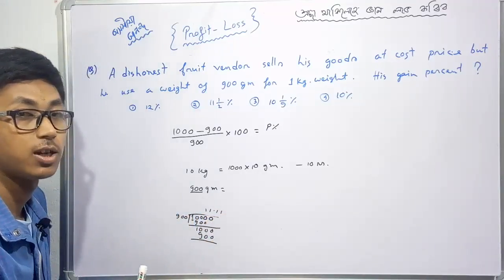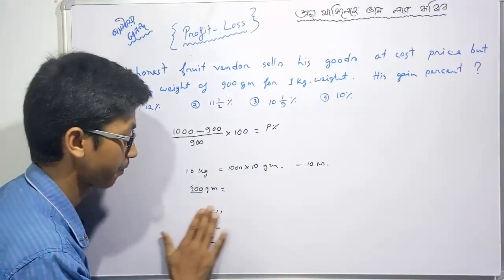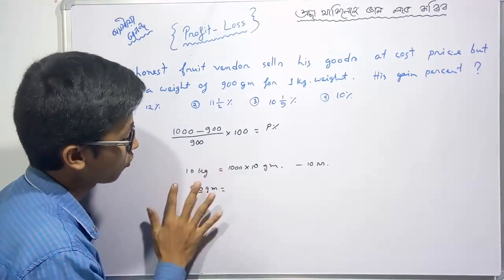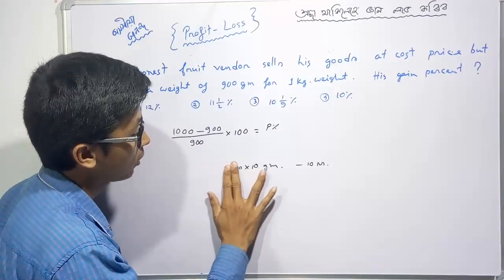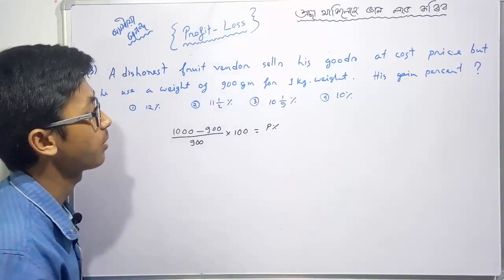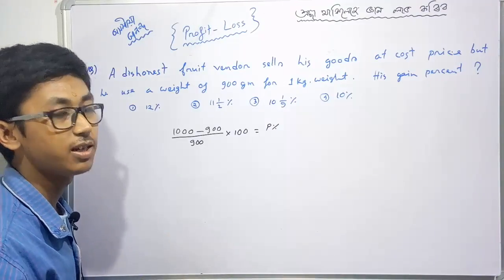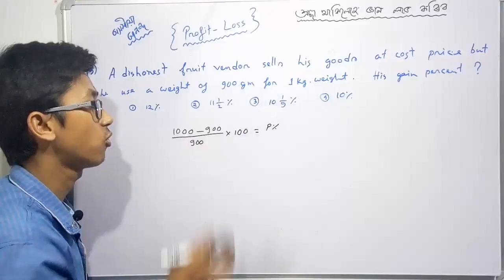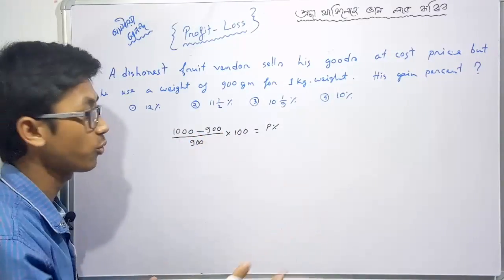For 1 kilogram or 1000 grams, he gives the customer only 900 grams. The customer pays for 1 kg but receives 900 grams. His profit comes from this difference.